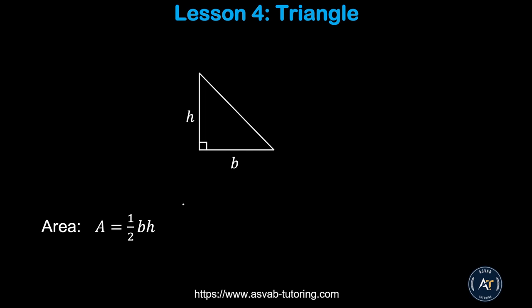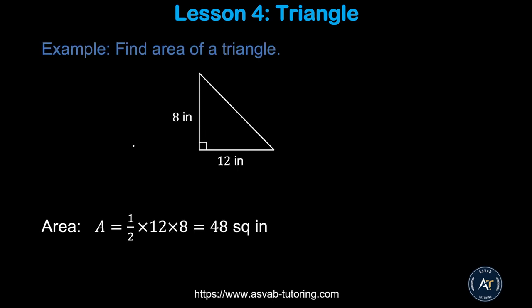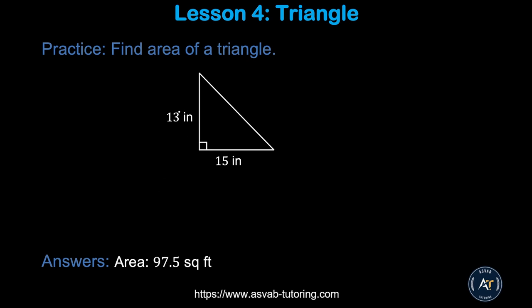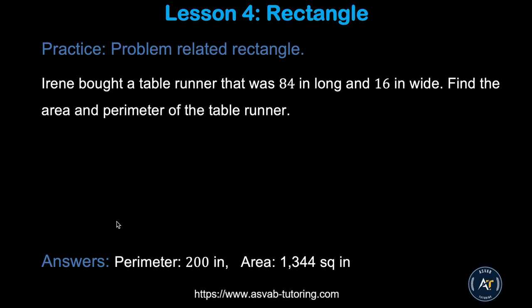Next, we'll learn how to find the area of a triangle. The area of a triangle equals base times height divided by 2, or one-half times base times height. In the example figure, the base is 12 and the height is 8. Using the formula, one-half times 12 times 8 gives you 48 square inches.